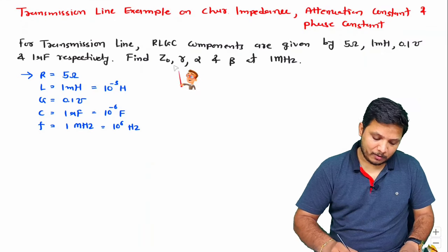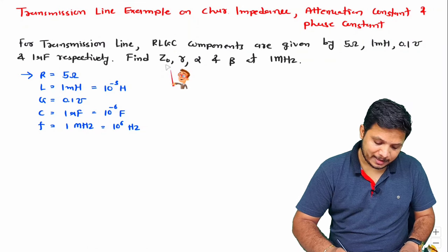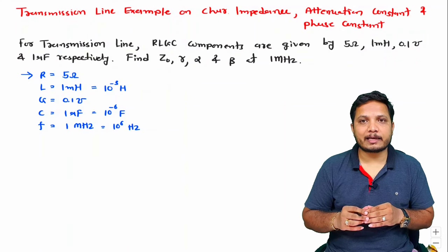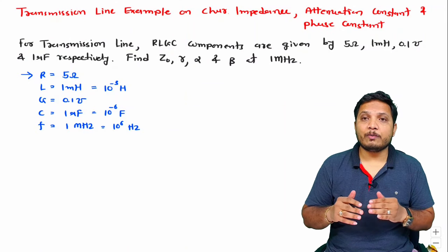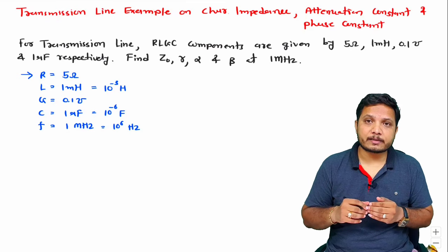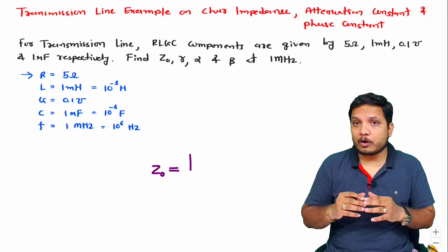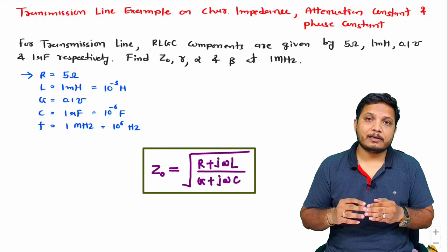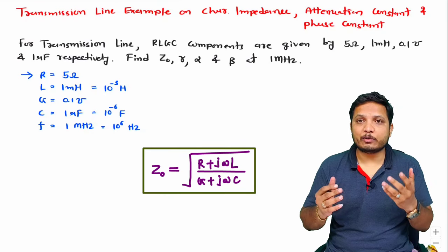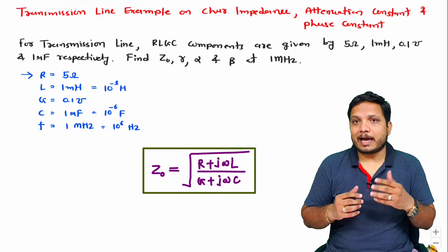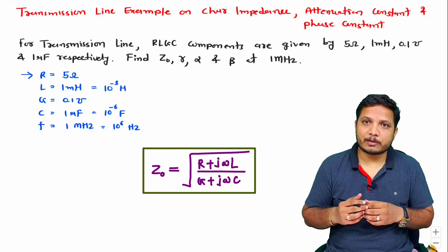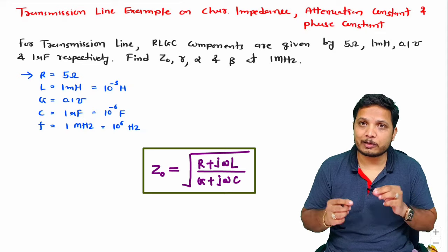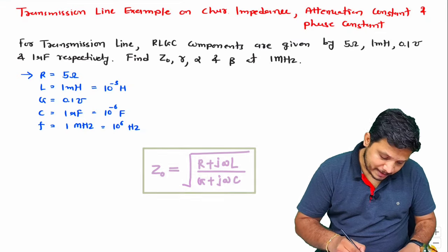First we identify the characteristic impedance. As explained in previous transmission line videos, the characteristic impedance Z0 is derived as the square root of (R + jωL) divided by (G + jωC). We just need to place all the given components into the calculator to get the solution. A very essential thing is knowing how to use the calculator.